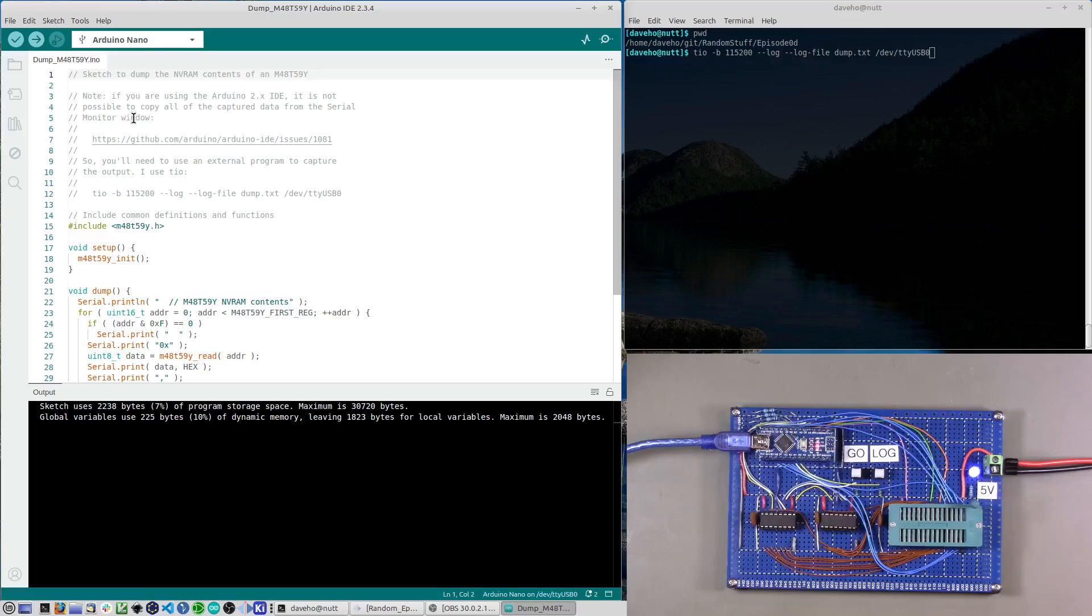The next sketch I'd like to demonstrate is the dump sketch. This is a really simple one. It just goes through all of the NVRAM and reads each byte and just prints a hex representation of the data to the Arduino serial monitor. So there is a slight annoyance with running this sketch, which is that there's a bug in the Arduino IDE that doesn't allow you to actually cut and copy and paste data in the serial monitor window. Only the data that's visible can be copied. So that's not very useful since there's quite a bit of data that's going to be dumped.